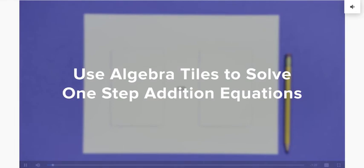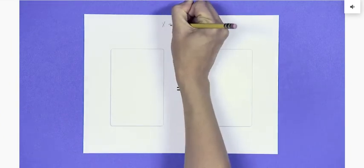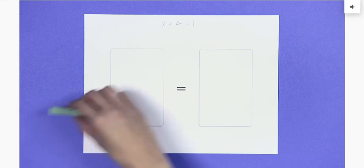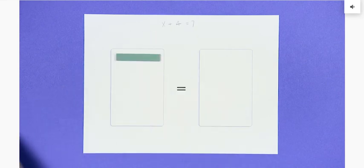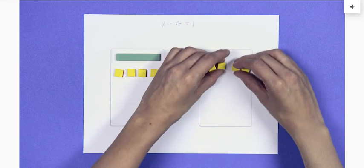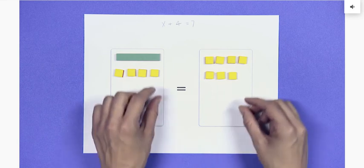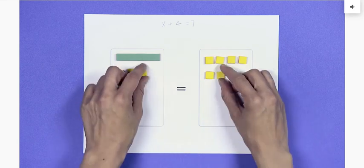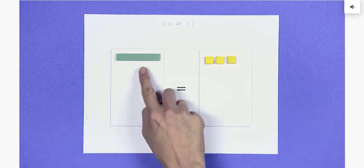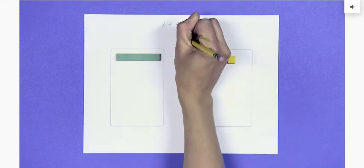Use algebra tiles to solve one-step addition equations. Find the value of x for the equation x plus 4 equals 7. Model the equation using algebra tiles. Place one x-tile and four one-tiles on the left side of the mat. Place seven one-tiles on the right side of the mat. To isolate the variable, or the x-tiles, remove the same number of one-tiles from each side of the mat until the x-tile is by itself. There are three one-tiles remaining on the right side. So, x equals 3.